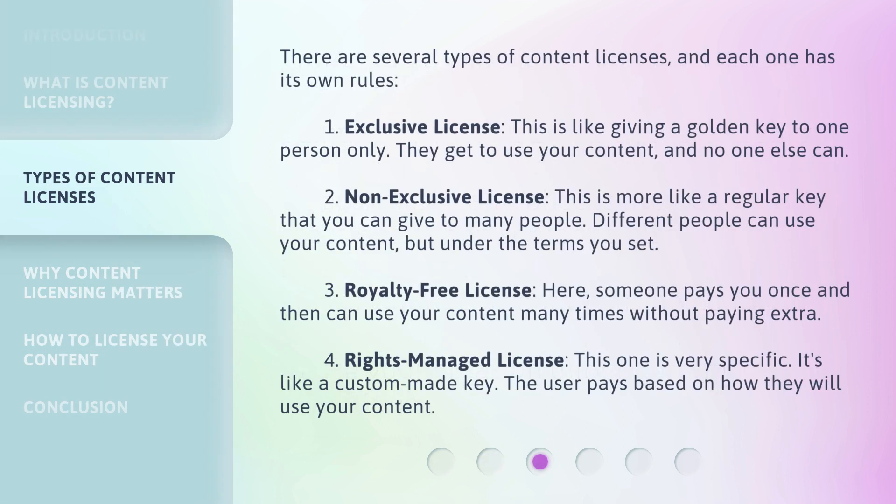There are several types of content licenses, and each one has its own rules. First, the exclusive license. This is like giving a golden key to one person only — they get to use your content, and no one else can. Second, the non-exclusive license. This is more like a regular key that you can give to many people. Different people can use your content, but under the terms you set.